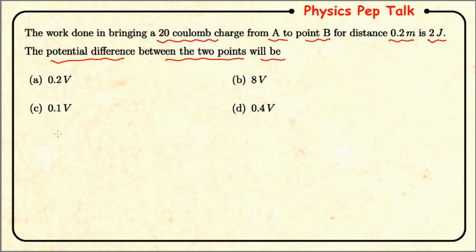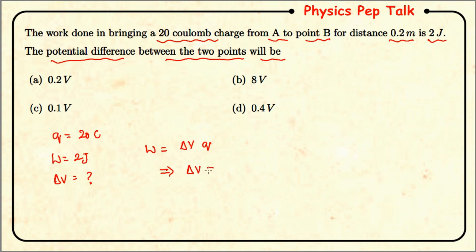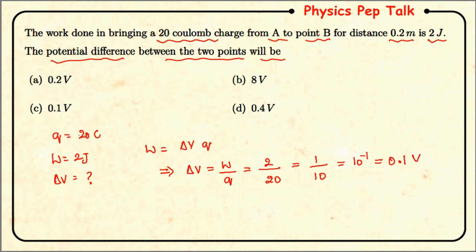We have a 20 coulomb charge moved from point A to point B at a distance of 0.2 meters, with work done of 2 joules. We need to find the potential difference delta V. We know that work done is given by W = delta V times q, so delta V = W divided by q. That is W = 2 joules, q = 20 coulombs, so delta V = 2/20 = 1/10 = 0.1 volts. Therefore option C, 0.1 volt, is the correct answer.